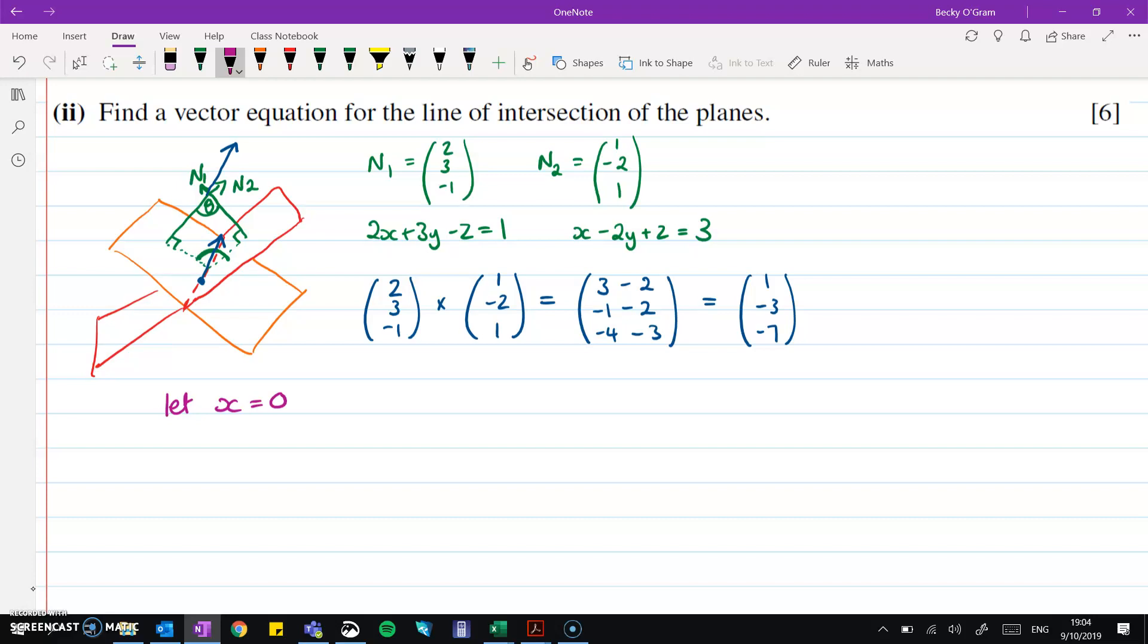So if we take the value of x being 0, we're left with 3y minus z equals 1 and minus 2y plus z equals 3. Now if I add together those two equations, I will eliminate the z and we'll end up with y equals 4. And if y equals 4, z must then be, if we substitute it back into here, we get 12 minus z equals 1. So z must be 11.